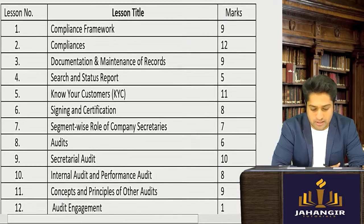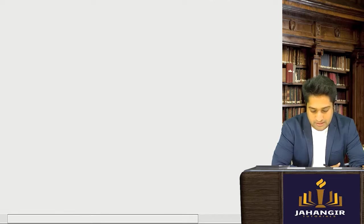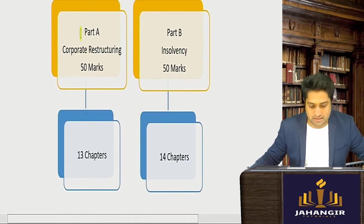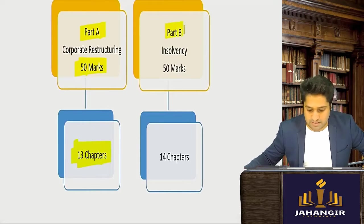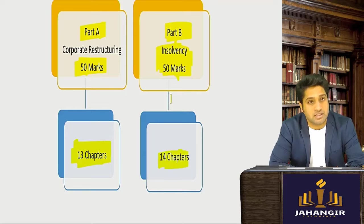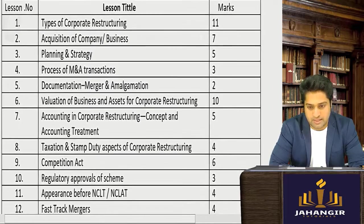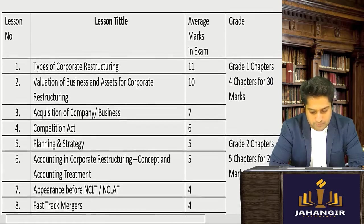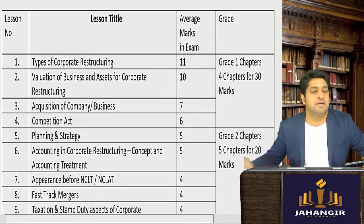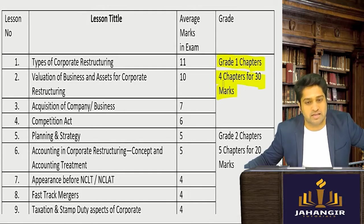Next is corporate restructuring, which has two parts. Part A has 50 marks covering mergers, takeovers, and related chapters — 15 chapters for 50 marks. Part B is mostly about insolvency — 14 chapters for 50 marks. Let's see Part A's chapter-wise weightage. The grade one chapters for Part A are 4 chapters coming for around 30 marks.